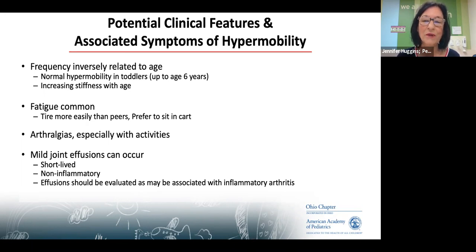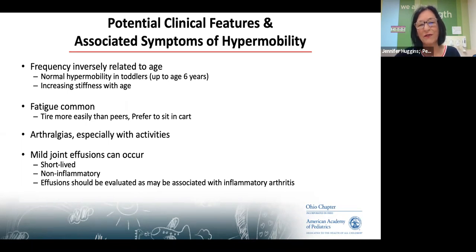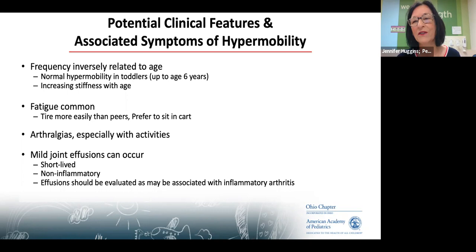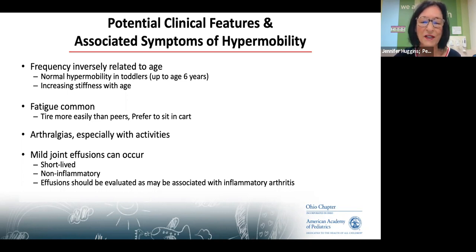Hypermobile children tire easily. A big part of that is because the same collagen that makes up the ligaments and tendons also lines your blood vessels. In order to feel hydrated, they have to fill a balloon rather than a rigid hose. So they tire easily — either because they're getting joint pain from their flexibility or because they're not hydrated enough. Hydration is a key thing our physical therapists emphasize.